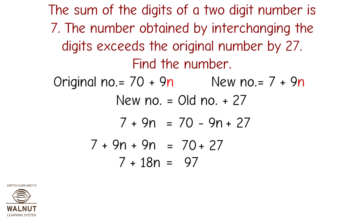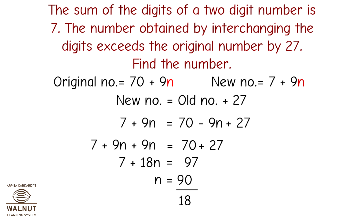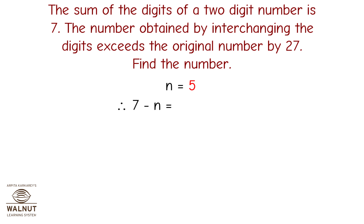Therefore 18n equals 97 minus 7, which equals 90. Therefore n equals 90 upon 18, which equals 5. So n equals 5, and 7 minus n equals 7 minus 5, which equals 2. The number is 25.